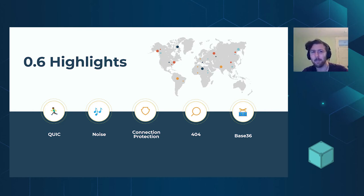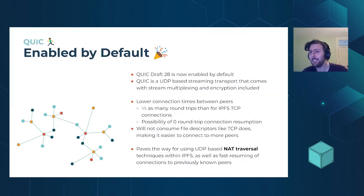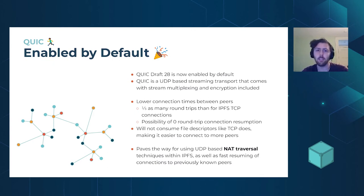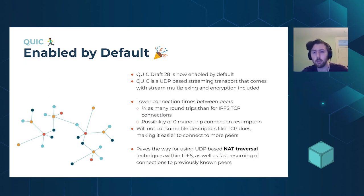QUIC is now enabled by default — it's been around as an experimental feature for a while. We're using QUIC draft 28 as the stable version within IPFS. QUIC is a UDP-based streaming transport that bundles encryption, streaming, and stream multiplexing, allowing multiple streams of data over a single connection.